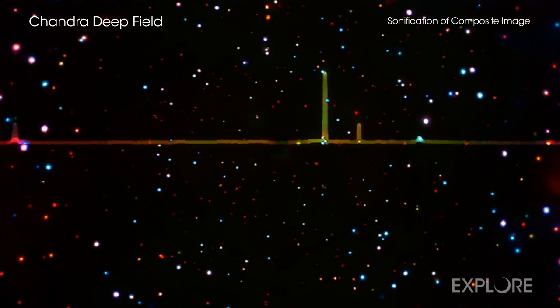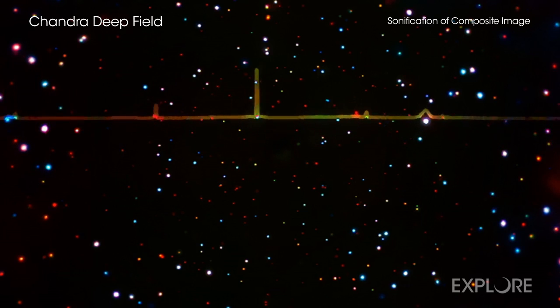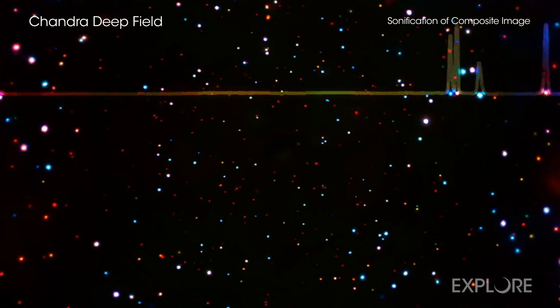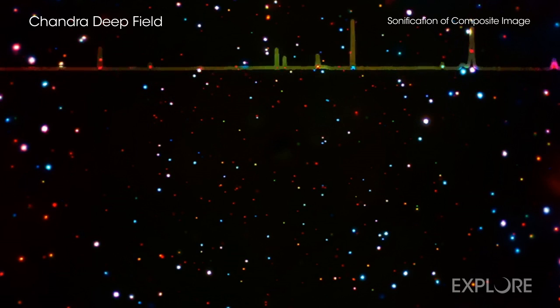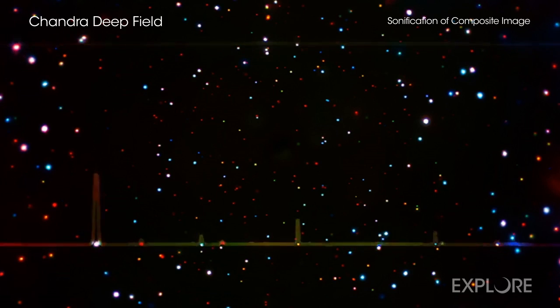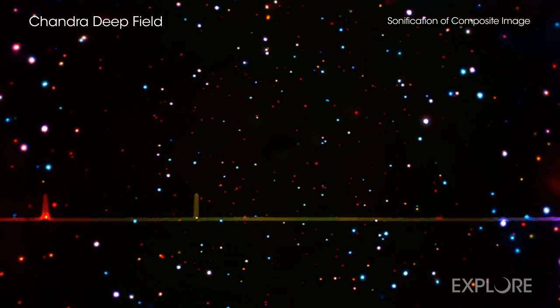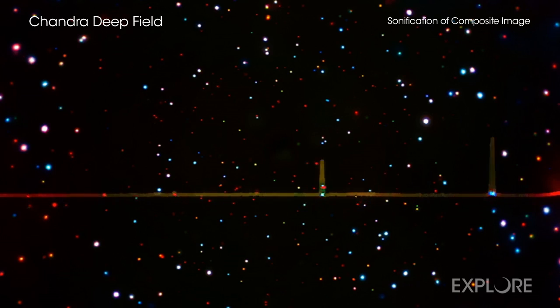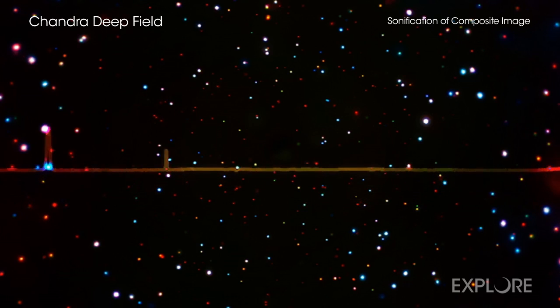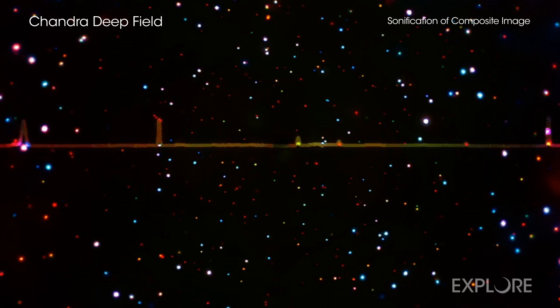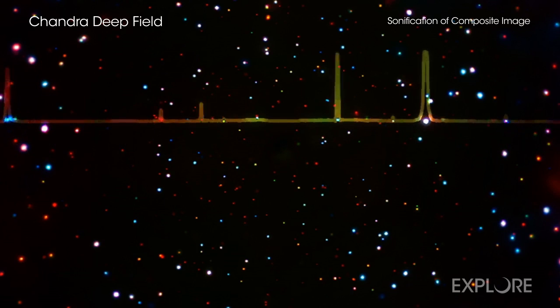In this data sonification, the colors dictate the tones as the bar moves from the bottom of the image to the top. More specifically, colors toward the red end of the rainbow are heard as low tones, while colors toward purple are assigned to higher ones. Light that appears bright white in the image is heard as white noise.